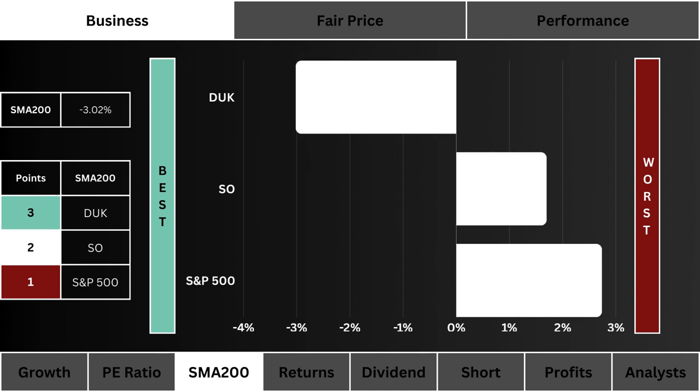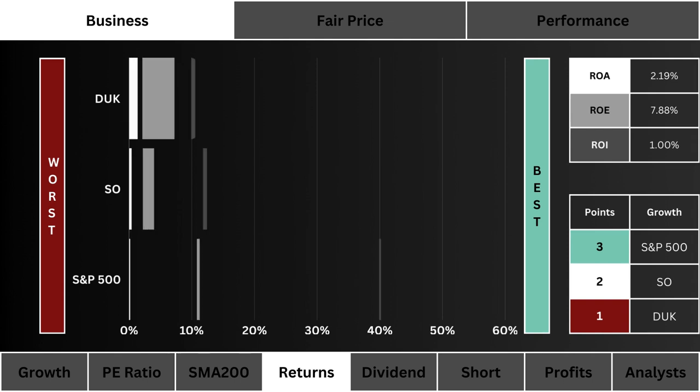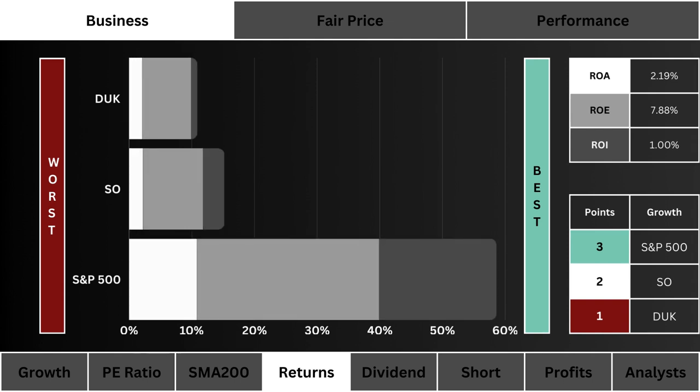For the 200-day moving average, what you see here is the stock that is trading lower than its 200-day moving average the most. We want to figure out which stock is furthest below what it has been normally trading at — this is a sign of good value.